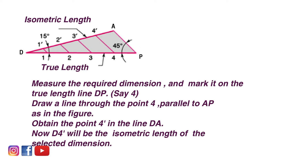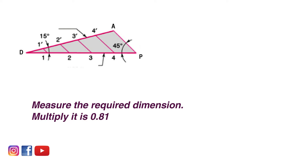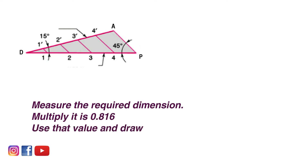Now you can measure D to 4-dash, which will be your isometric length corresponding to dimension D4 taken from your diagram. However, it is a tedious job because you have to take all the dimensions, mark them on the isometric scale, convert them into isometric values, and then draw. The easiest method is: in an isometric scale, the actual dimension is diminished by 81.6% — approximately 82%. So you can take all the values of your diagram, multiply by 0.816, and use that value for drawing the isometric projection.